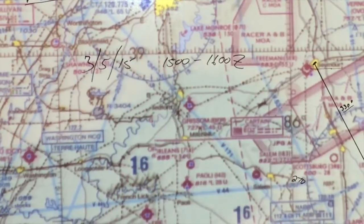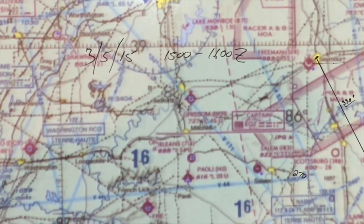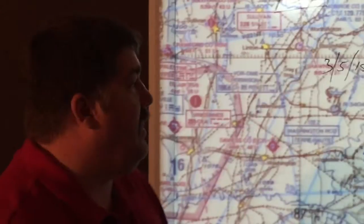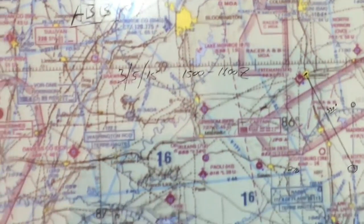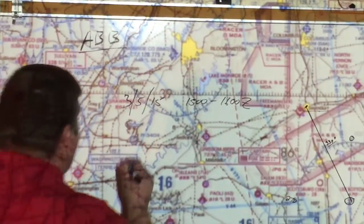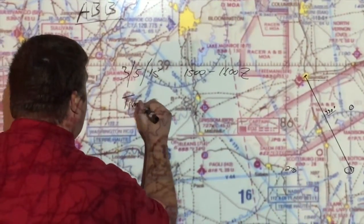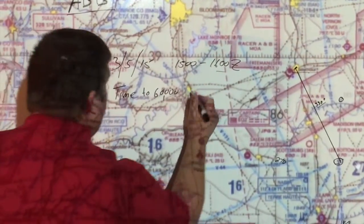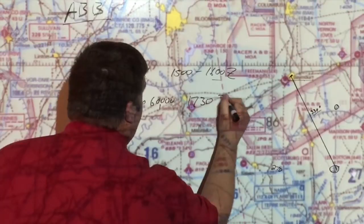You also have to provide them with a time to 60,000 feet. A standard weather balloon like the one here — given normal helium and everything else — give yourself 90 minutes. If you just add 90 minutes to it, this is not an exact science, but you'll get pretty close to what you need. So time to 60,000 feet: adding 90 minutes gives us 1730Z.